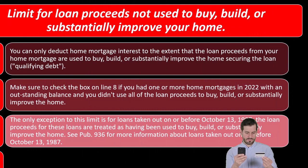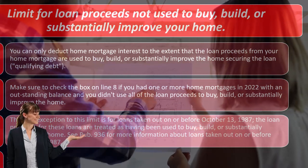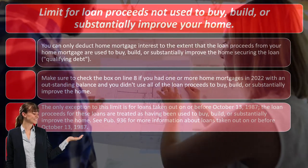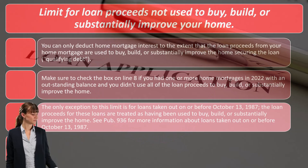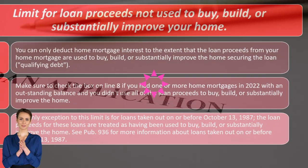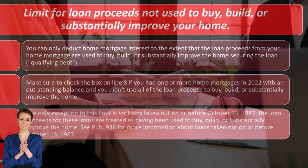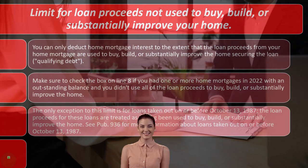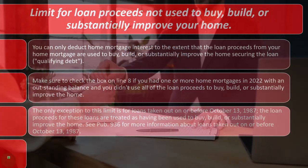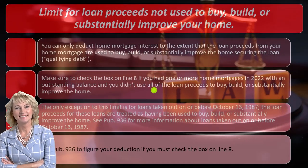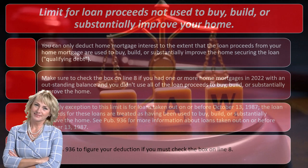Loan proceeds for loans taken out on or before October 13, 1987 are treated as having been used to buy, build, or substantially improve the home. See Publication 936 for more information about those loans. They changed the laws and had to set cutoff dates. Because mortgages are long-term — often 30-year loans — if people planned on the prior law, you can't really change it retroactively for deals already made. So we end up with these cutoffs to fix things going forward without hurting people who made decisions based on the prior law.